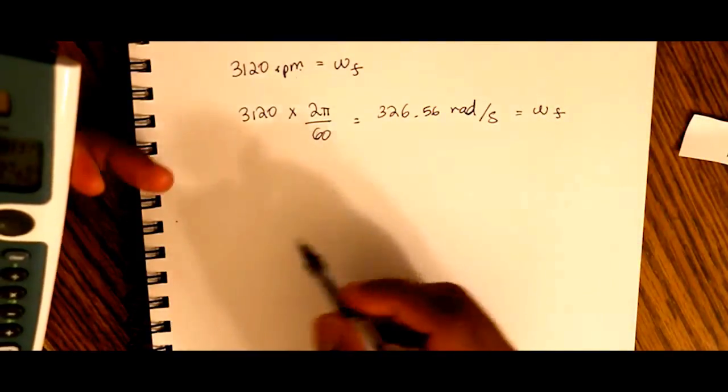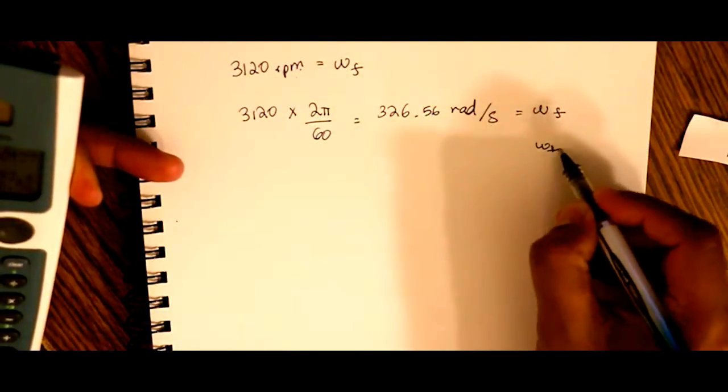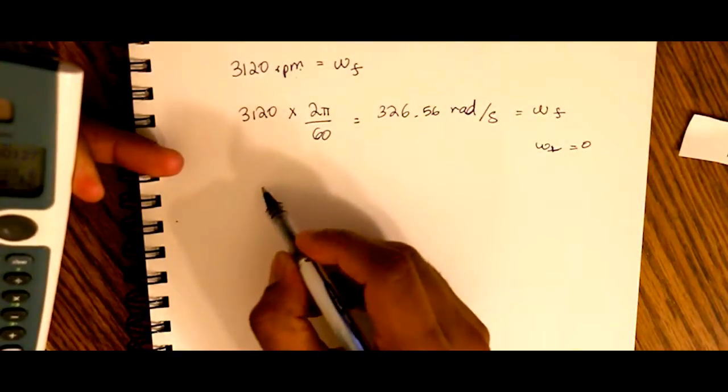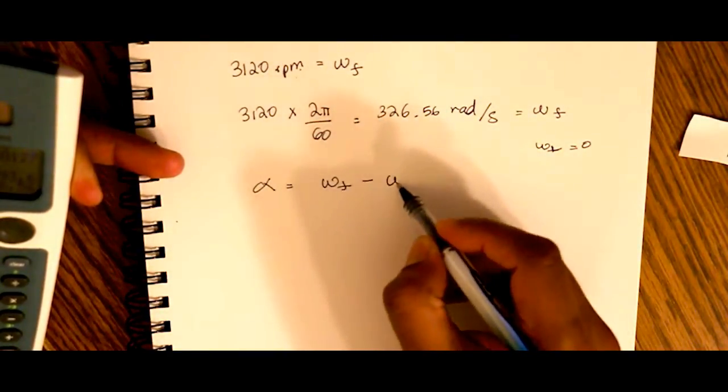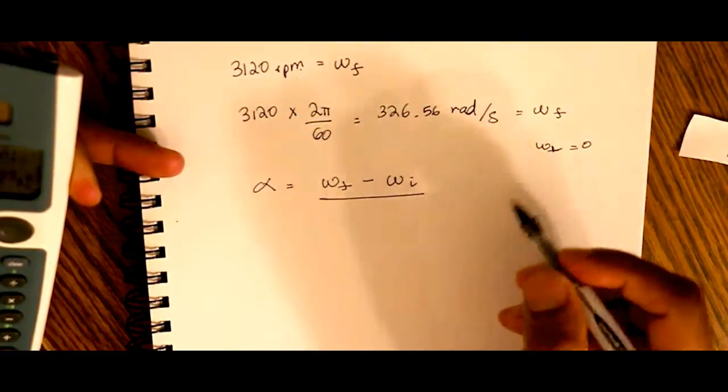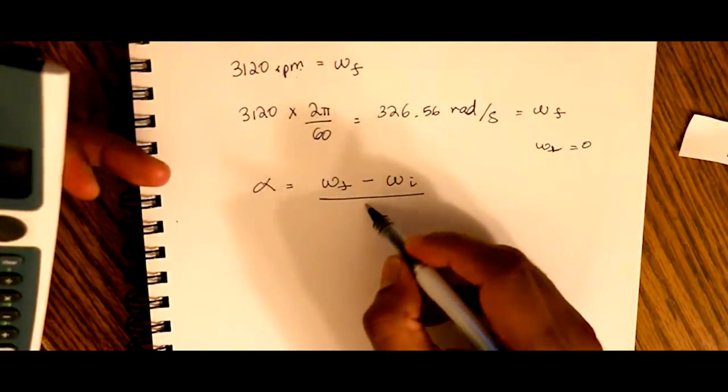Our initial angular velocity, ωi, is zero. So our angular acceleration is final angular velocity minus initial angular velocity all over change in time.